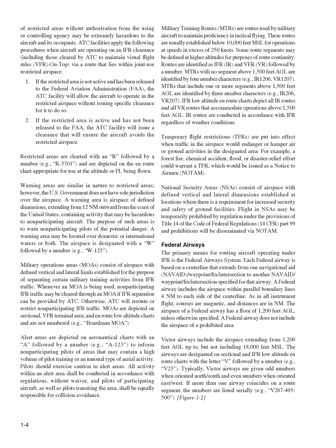These routes are usually established below 10,000 feet MSL for operations at speeds in excess of 250 knots. Some route segments may be defined at higher altitudes for purposes of route continuity. Routes are identified as IFR, IR, and VFR, VR, followed by a number. MTRs with no segment above 1,500 feet AGL are identified by four number characters, for example IR-1206, VR-1207. MTRs that include one or more segments above 1,500 feet AGL are identified by three number characters, for example IR-206, VR-207. IFR low-altitude on-route charts depict all IR routes and all VR routes that accommodate operations above 1,500 feet AGL. IR routes are conducted in accordance with IFR regardless of weather conditions.